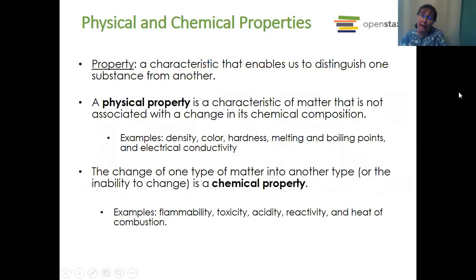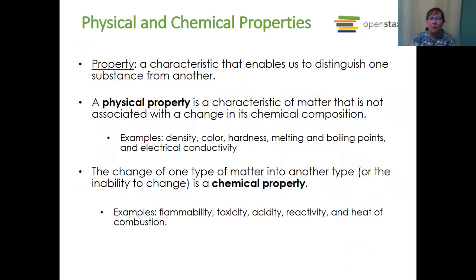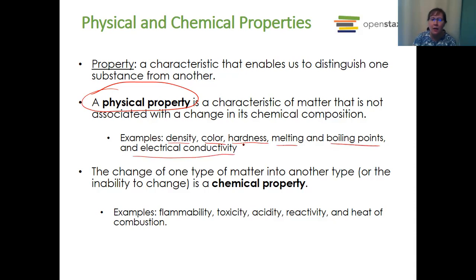Now let's look at properties. A property is a characteristic that enables us to distinguish one substance from another. A physical property is a characteristic of matter not associated with a change in its chemical composition — things like density, color, hardness, melting and boiling points, and electrical conductivity. The change of one type of matter into another, or the inability to change, is a chemical property — that might be flammability, toxicity, acidity, reactivity, and heat of combustion.